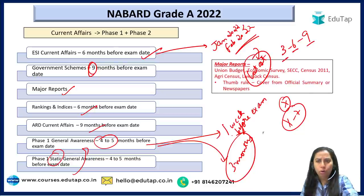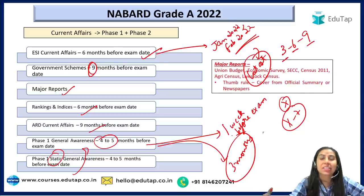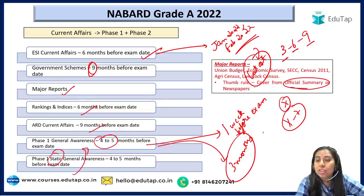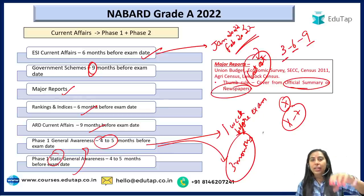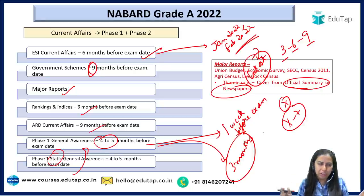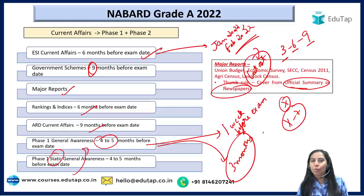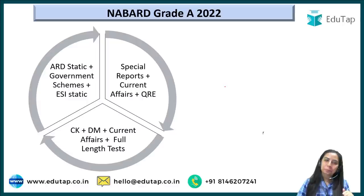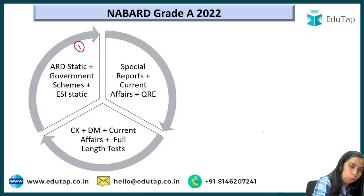Union Budget, Economic Survey, and SECC — if you are preparing on your own, cover them from the official summary or newspaper highlights — the executive summary. Otherwise find lectures on these topics, as major reports become very difficult to cover alone. Our channel also has some content on these. So that is the three-step approach I have told you.